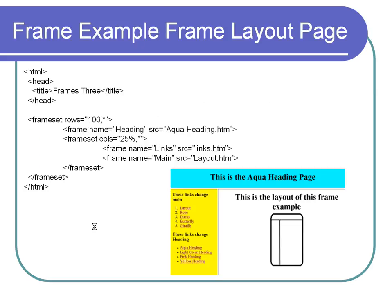Let's look at the overall structure of a frame layout page. For this particular example, you need four web pages. One web page fills the links area, another is the heading or title at the top, and the main area is usually the biggest frame. The layout page starts with HTML and head tags. Notice there is no body tag — this is the layout page and it uses framesets instead.